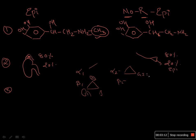Alpha two receptors are found in the GIT, platelets, as well as the presynaptic nodules, which is important for the pharmacological action of both epinephrine and norepinephrine. Looking at the pharmacological difference, epinephrine works simultaneously and equally on all three receptors: alpha one, beta one, and beta two.